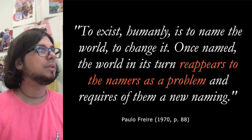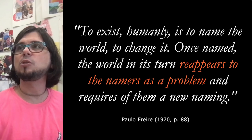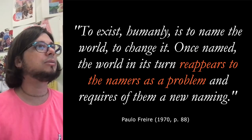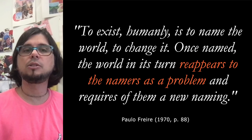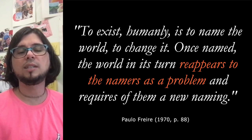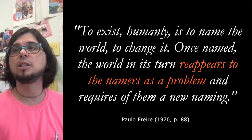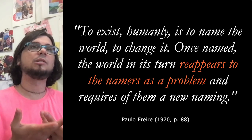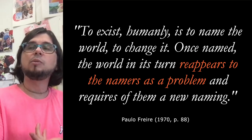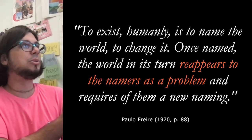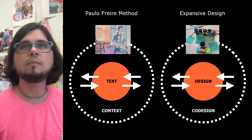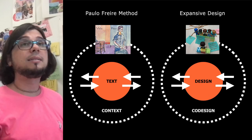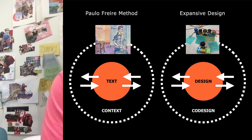Paulo Freire is very interested in learning the word to change the world — that is what he writes about in 'Pedagogy of the Oppressed.' He says: 'To exist humanly is to name the world, to change it. Once named, the world in its turn reappears to the namers as a problem and requires of them a new naming.' That means the world is never done — it is constantly changing, and we are part of it. Once we name it, the world strikes back with new things, requiring new names.